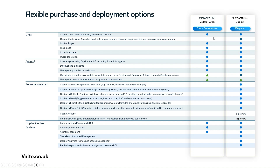Where we see the actual difference between the free plan and the paid-for plan — and this is across the board — is that Copilot chat when it's work grounded, meaning work data in your tenant's Microsoft Graph and third-party data via Graph connectors, basically anything Copilot is accessing from Microsoft 365 — your work documents, Word documents, Excel, PowerPoints, Teams — requires a premium license.